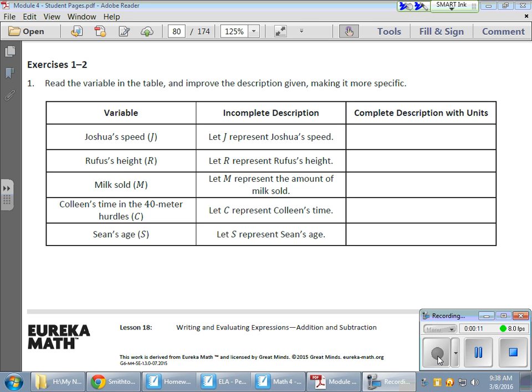But the first thing we need to discuss here is how specific we need to be with regard to our real-world situations. For example, we have Joshua's speed. We're going to use J to represent Joshua, but the word speed isn't descriptive enough. We need to be a bit more specific.